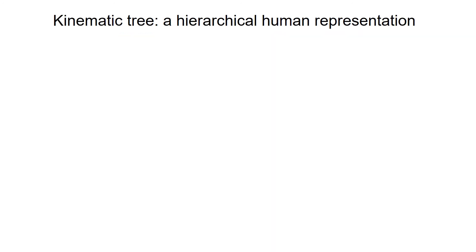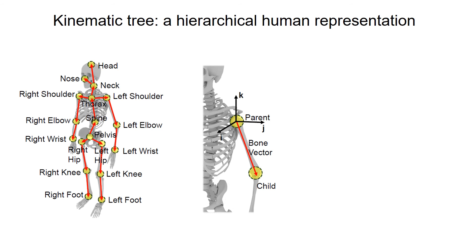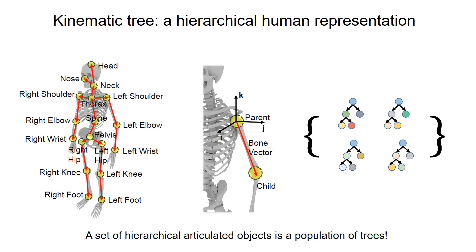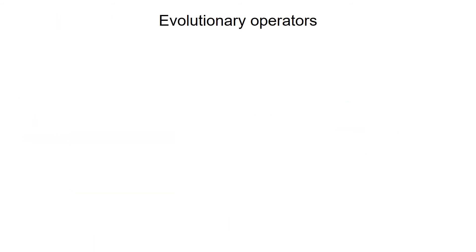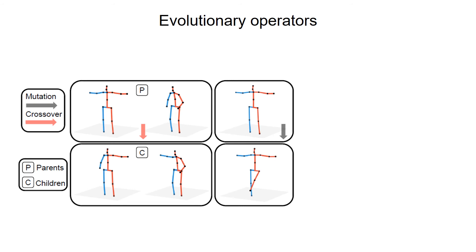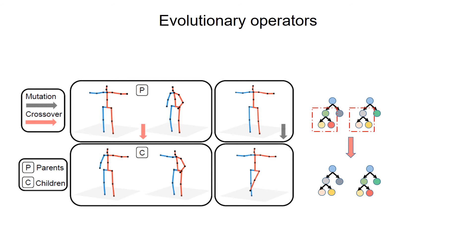To efficiently produce novel 3D labels with minimum human effort, we take advantage of a hierarchical representation of the human body, where each 3D skeleton is represented by a kinematic tree. A set of 3D labels is viewed as a population of tree-structured data. Under this representation, we propose a novel data generation approach using evolutionary operators to discover novel 3D skeletons in the data space. The crossover operator exchanges random subtrees of two data samples, whereas the mutation operator randomly modifies a skeleton node.